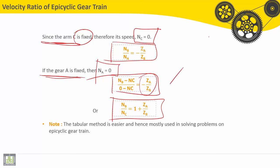So it seems a lot of calculations in the second method. Note: the tabular method is easier and hence mostly used in solving problems on epicyclic gear trains.